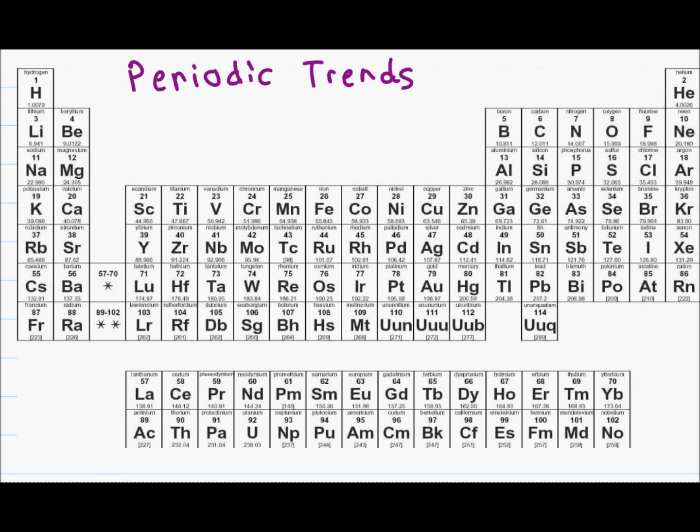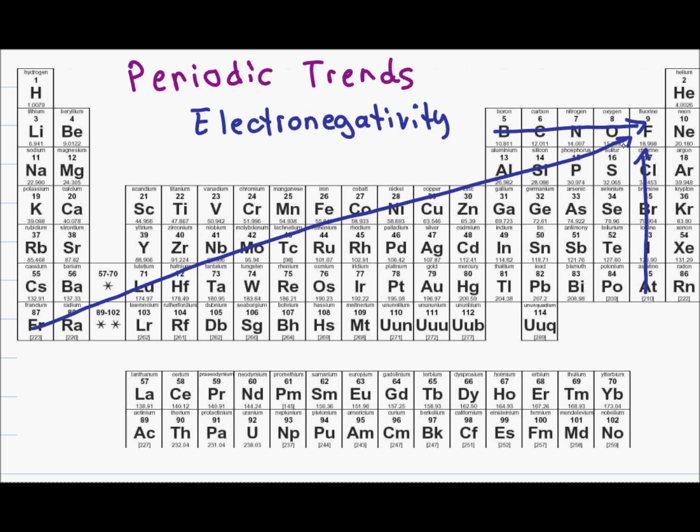There are two important periodic table trends that you have to recognize in organic chemistry. The first is electronegativity. Recall that electronegativity is a measure of how strongly an atom desires the electrons of another atom, whether in terms of taking or sharing the electrons. As you move towards the right and upwards on the periodic table, electronegativity increases. You can summarize this by drawing one arrow moving upward and towards the right, starting from francium and ending at fluorine.